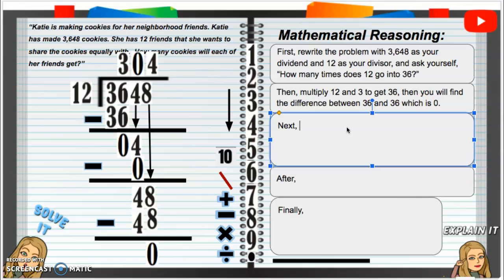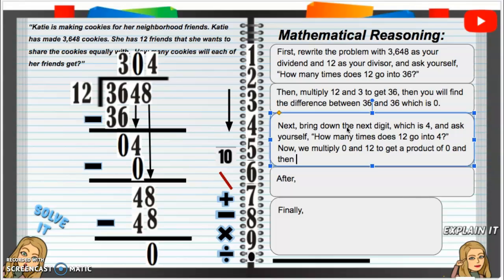Next, we're going to bring down the next digits, which is 4. And ask yourself, how many times does 12 go into 4? Now, we multiply 0 and 12 to get a product of 0 and then subtract 0 from that 4 to get 4.